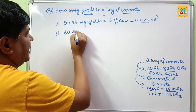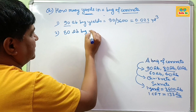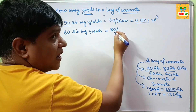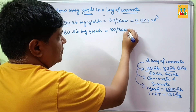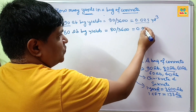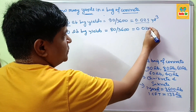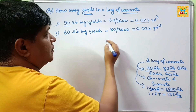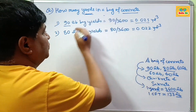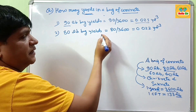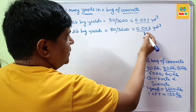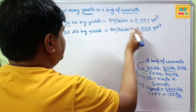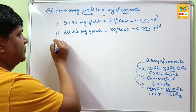For an 80 lb bag yields: 80 divided by 3600 comes out to about 0.022 cubic yards. The answer to how many yards are in an 80 lb bag of concrete is 0.022 cubic yards.